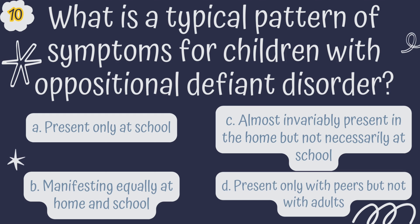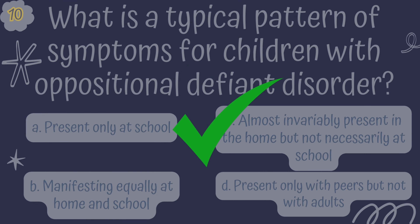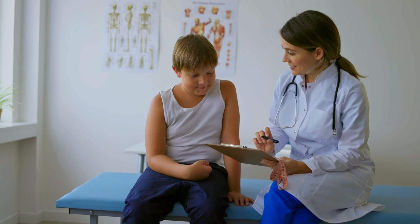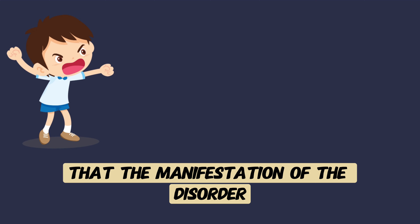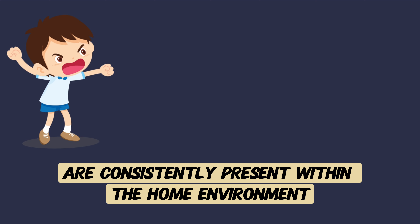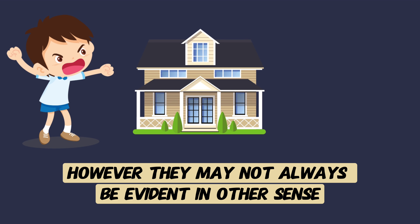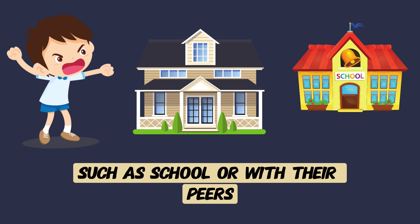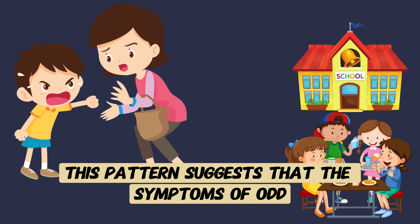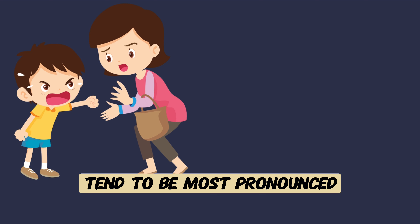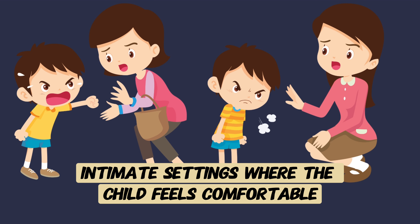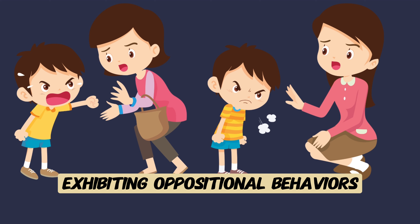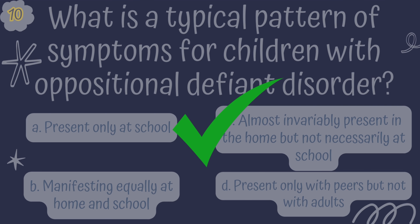The correct answer is C, almost invariably present in the home, but not necessarily at school. The manifestation of ODD is consistently present within the home environment but may not always be evident in other settings such as school or with peers. This pattern suggests that ODD symptoms are most pronounced in familiar, intimate settings where the child feels comfortable exhibiting oppositional behaviors.